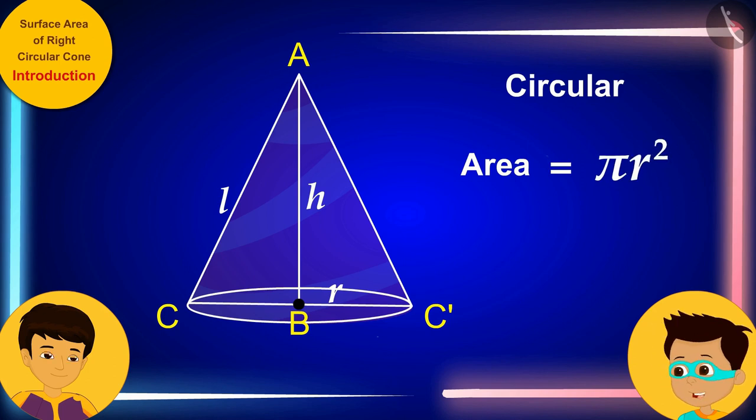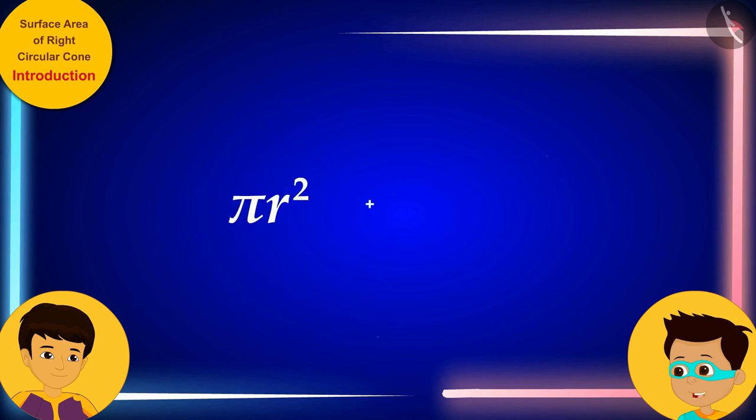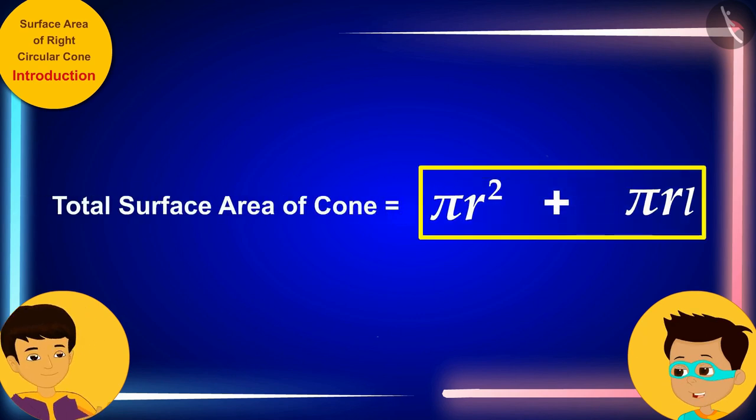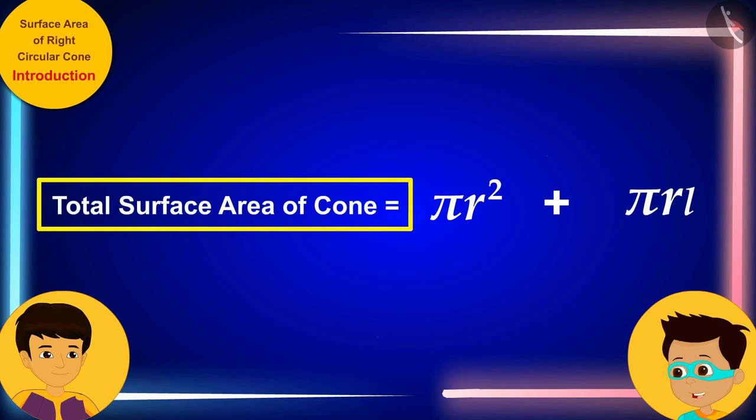Now, if we add it to the formula for the curved surface area of the cone, then we will get the formula of total surface area of the cone.